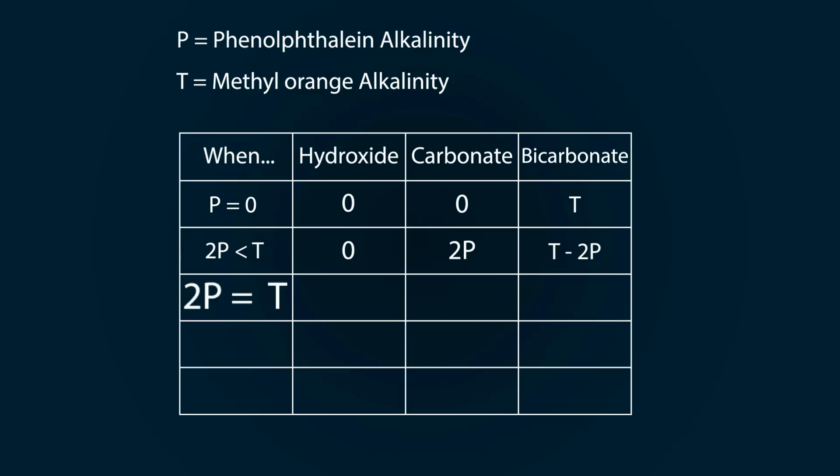When 2P is equal to T, hydroxyl ion is 0, carbonate ion is 2P, and bicarbonate ion is 0. When 2P is greater than T, hydroxyl ion is 2P minus T, carbonate ion is 2 times (T minus P), and bicarbonate ion is 0. When P is equal to T, hydroxyl is T, carbonate is 0, and bicarbonate is 0.